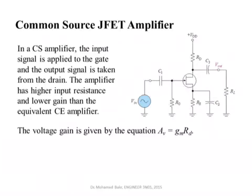For this stage, there is a typo here that I intentionally left — the gain is effectively negative. It is not really GM·RD, it is minus GM·RD. So as a magnitude the signal will be amplified by this ratio, but there is a phase inversion.